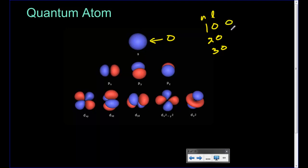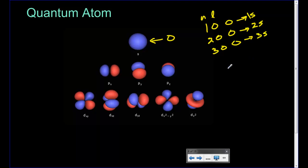When we have L=0 and ML=0, that describes what's going on with an S orbital. So that arrangement indicates a 1S, 2S, or 3S orbital depending on the energy level. And looking down at the P orbitals, those would indicate ML values of negative one, zero, and one.